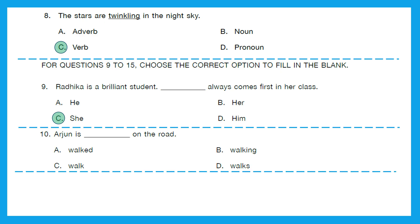Question 10: 'Arjun is dash on the road.' The options are walked, walking, walk, or walks on the road. The sentence is in the present continuous tense because it expresses an action that is ongoing in the present. So the answer should be 'walking.' Option B: Arjun is walking on the road.